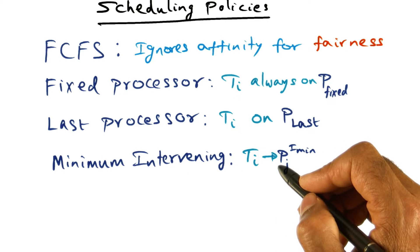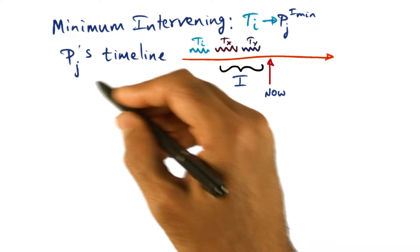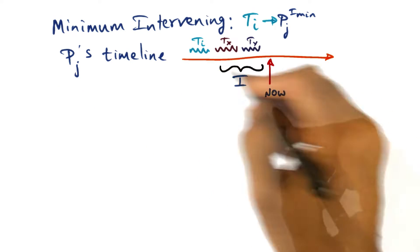I want to explain this a little bit more detail, so let's do this. If you look at the timeline for a particular process of PJ, it might look like this.